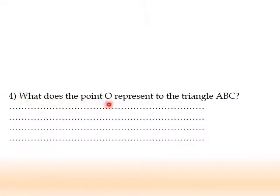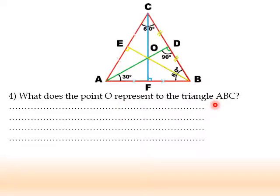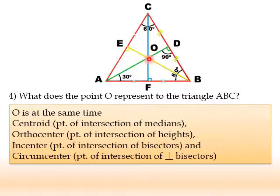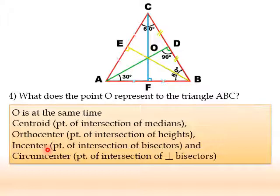Number 4: What does point O represent for triangle ABC? As we concluded, CF, AD, and BE are the medians, height, bisector, and perpendicular bisector — they are overlapping. O is the centroid since it's the point of intersection of the medians. It's at the same time the orthocenter since it's the point of intersection of the heights. It's also the incenter, or center of the inscribed circle, since it's the point of intersection of the bisectors. And it's the circumcenter, or center of the circumscribed circle, since it's the point of intersection of the perpendicular bisectors.